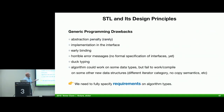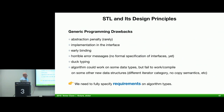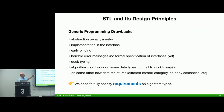Generic programming does have its drawbacks: abstraction penalty, the implementation interface in C++, early binding, horrible error messages because we don't have a formal specification of interfaces yet — though we're going to have it soon. Duck typing: the algorithm could work for some data types but fail to compile when applied to others that don't have the required semantics. In order to get this to work, we need to fully specify requirements on the algorithm types — what requirements does my type need to meet in order for this class of algorithms to work on it?